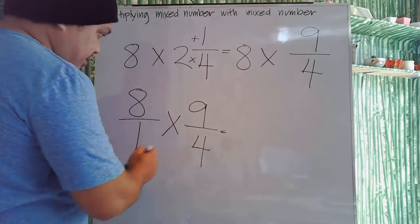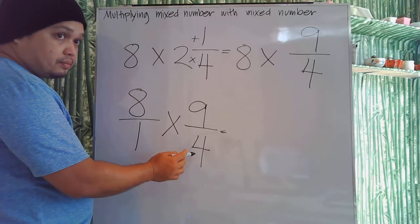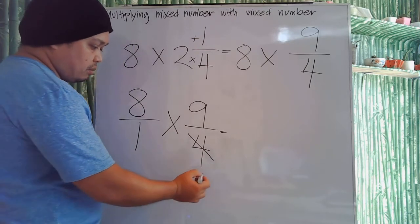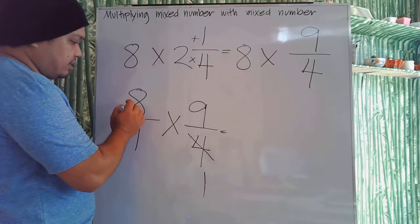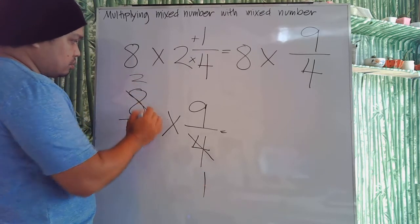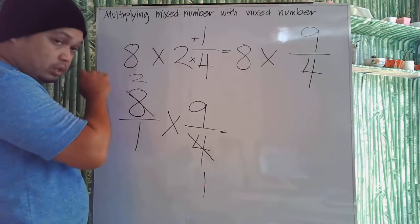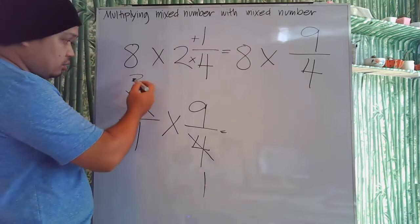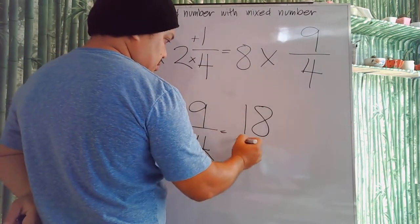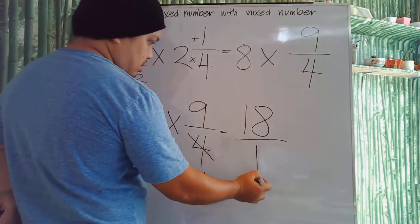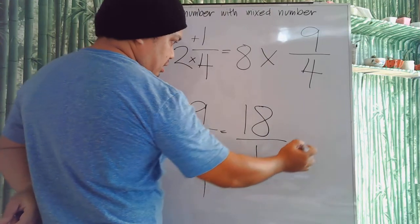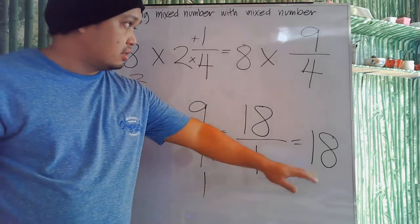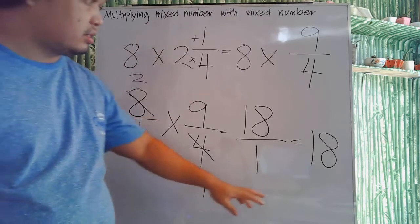Using cancellation, 8 and 4 can both be divided by 4. So 4 becomes 1, and 8 divided by 4 is 2. Now we multiply: 2 times 9 is 18, and 1 times 1 is 1. So 18 divided by 1 is 18. Therefore, 8 times 2 and 1 fourth equals 18. Just change the mixed number into an improper fraction first.